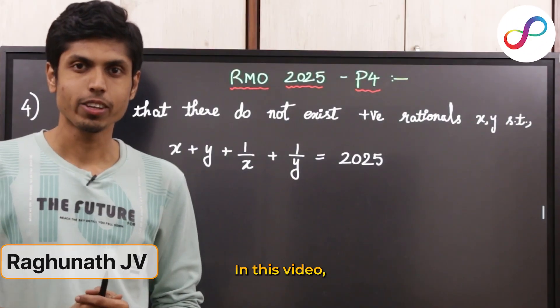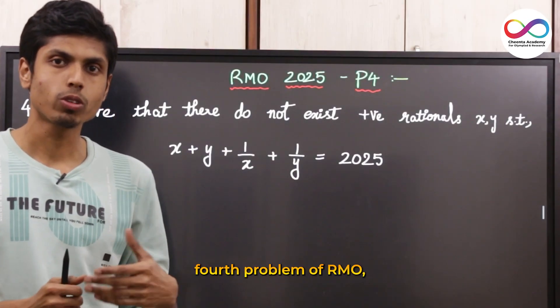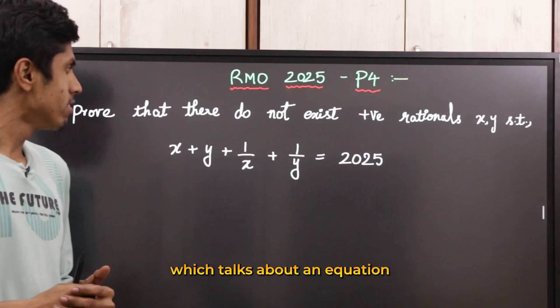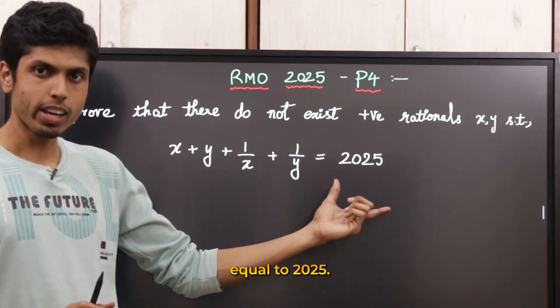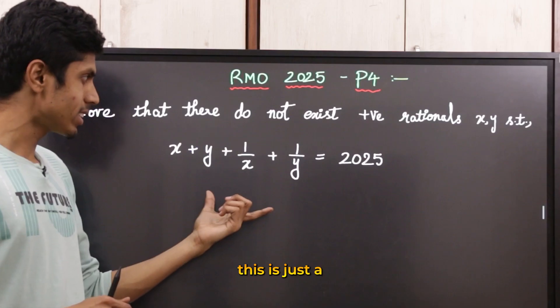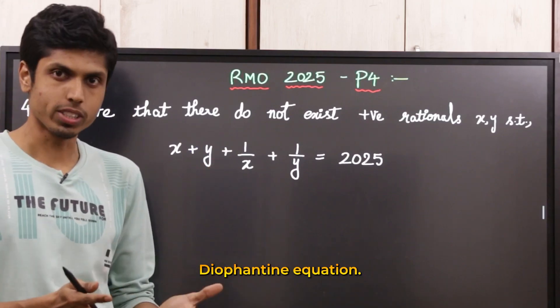Welcome everyone, in this video I'm going to discuss the fourth problem of RMO which talks about an equation equal to 2025. In fact, this is just a Diophantine equation.